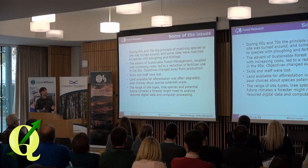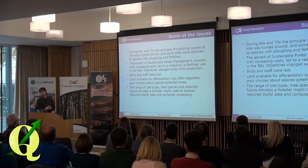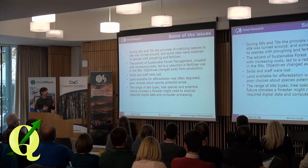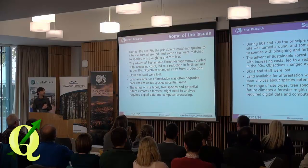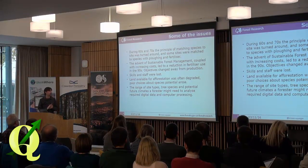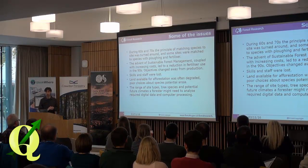With extensive ploughing and fertiliser, afforestation in Britain in the 60s and 70s allowed us to conquer a lot of sites. That was fine until the 80s and 90s when sustainable forest management became key, and in conjunction with increased costs, led to a reduction in fertiliser use. Additionally, objectives moved away from production forestry, skills and staff were lost, and the land available for reforestation was often degraded and poor quality. What was needed were digital data and computer processing to assist foresters in making decisions about their future forests.